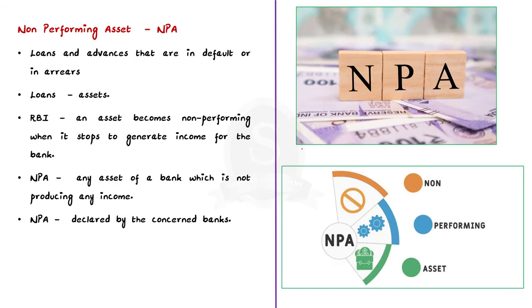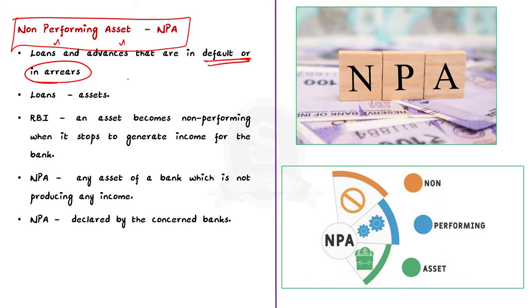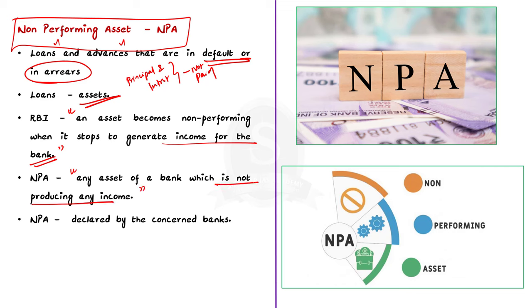First of all, what is Non-Performing Assets or NPA? NPA refers to the loans and advances that are in default or in arrears — that is, principal and interest payments are late or missed. For a bank, the loans given by it are considered to be the assets of the bank. As per RBI, an asset becomes non-performing when it stops generating income for the bank. So if the principal or the interest or both components is not being paid back to the lender, it would be considered as a non-performing asset. Simply put, NPA is any asset of a bank which is not producing any income, and these NPAs are declared by the concerned banks.